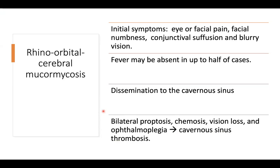The usual initial symptoms of rhinoorbital cerebral mucormycosis include pain in the face or eye and facial numbness. Patients can also present with orbital manifestations, particularly conjunctival suffusion and blurring of vision. Importantly, only half of patients with rhinoorbital cerebral mucormycosis will present with fever.